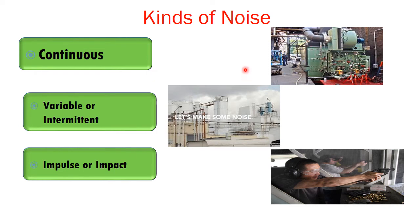Now let's talk about the different kinds of noises. There are various kinds: one is called continuous noise; second, variable or intermittent; and third, impulse or impact noise.